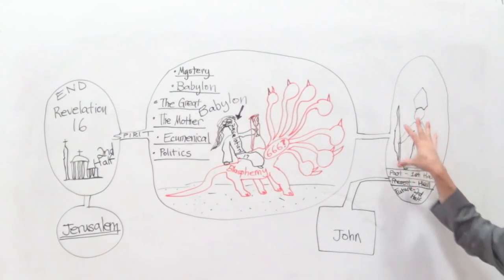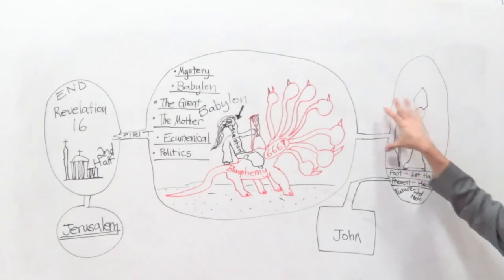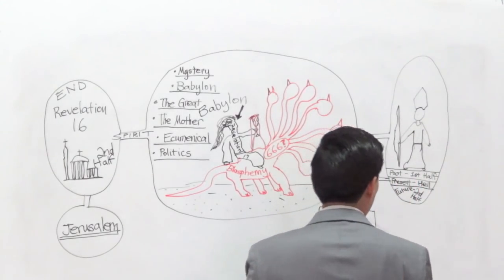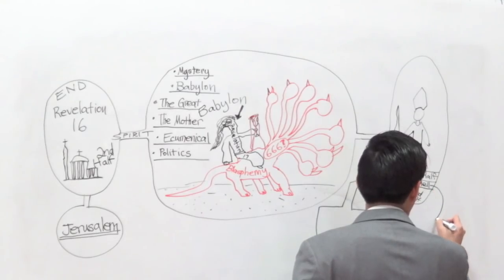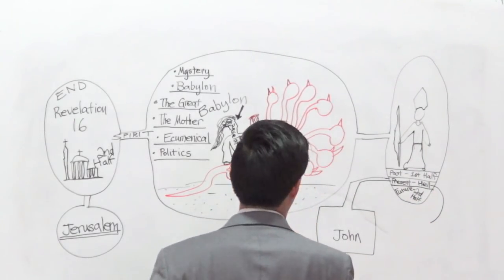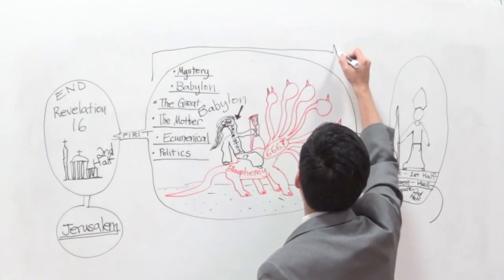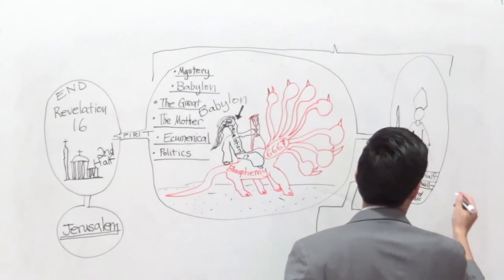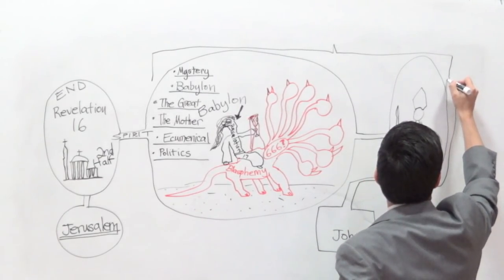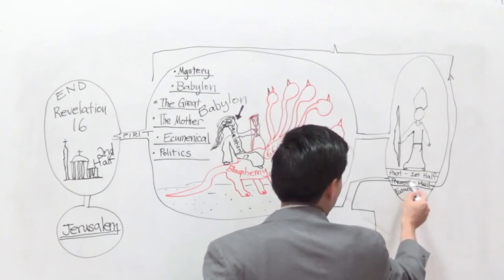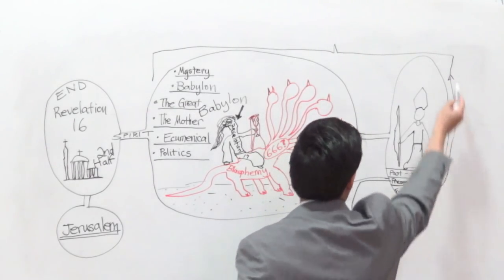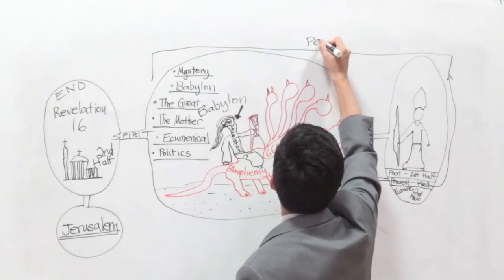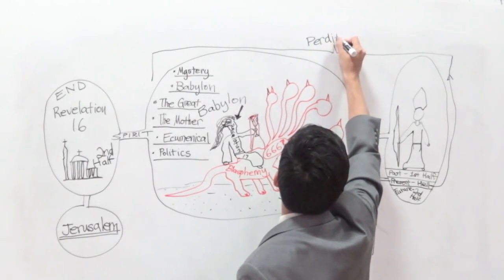At this present tense timeline which John is in, this is where the Antichrist is going to perdition. Let me reword hell with perdition, that way we can all understand where we're at. I think the best thing to do it is this way.